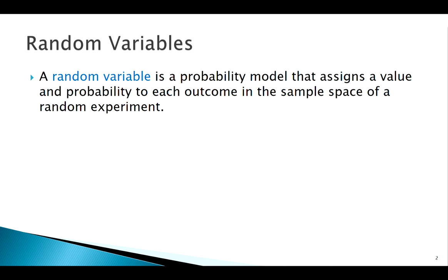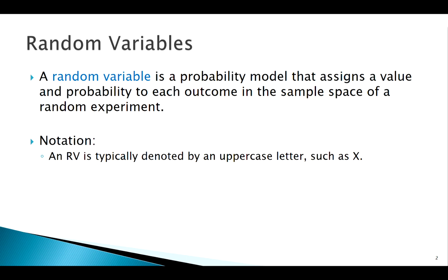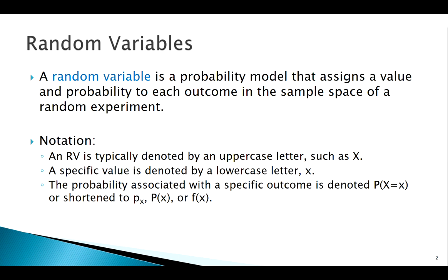Notation-wise, here's what we're looking at. Usually the random variable itself is denoted by a capital letter, usually X, and its specific value is denoted by a lowercase letter. So if I write something like P of big capital X equal to little x, that means the probability of my random variable being exactly equal to some number.